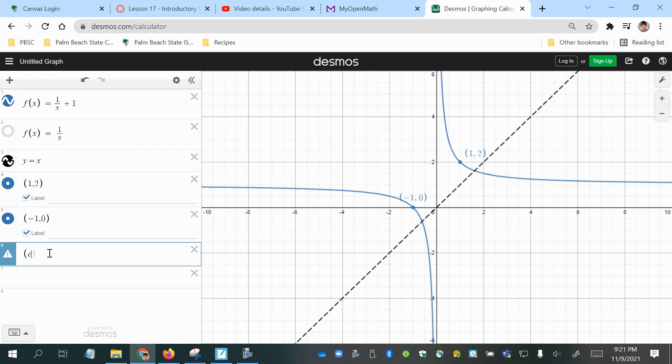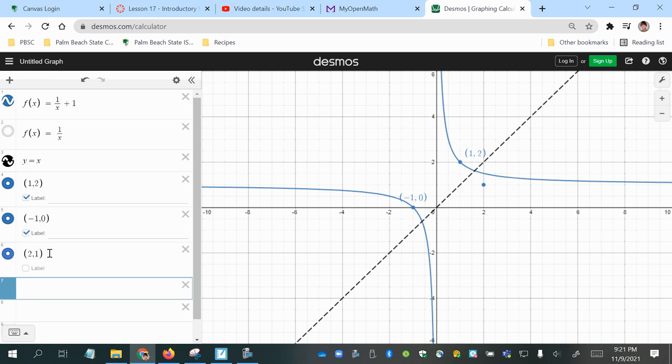If I can type, there we go. And switch negative 1 and 0, so I have 0, negative 1.